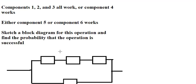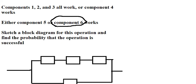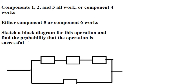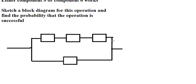For the next part, component 5 or component 6 works. That means if this one fails, the other one can work, or if this one fails, the other one can work — and vice versa — meaning everything will still be successful. So components 5 and 6 should be in parallel here.